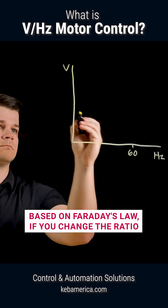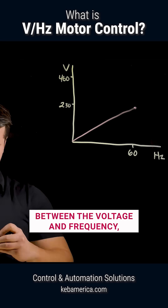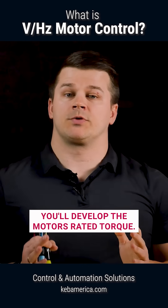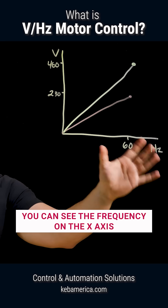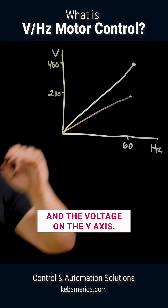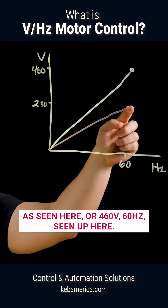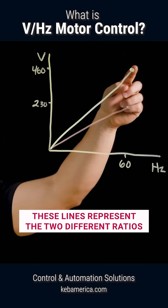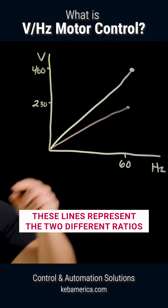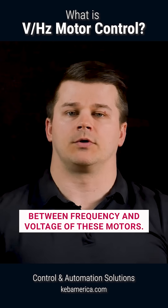Based on Faraday's law, if you change the ratio between the voltage and frequency, you'll develop the motor's rated torque. In this graph, you can see the frequency on the x-axis and the voltage on the y-axis. A common U.S. winding will be 230-60 Hz, as seen here, or 460-60 Hz, seen up here. These lines represent the two different ratios between frequency and voltage of these motors.